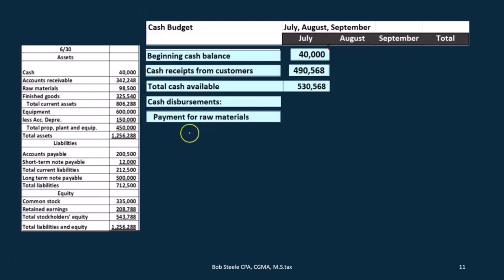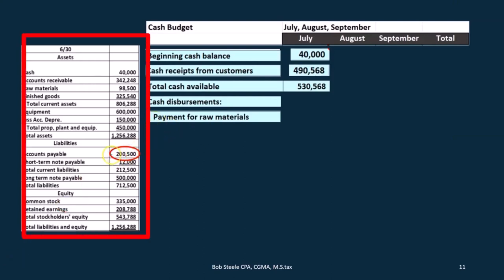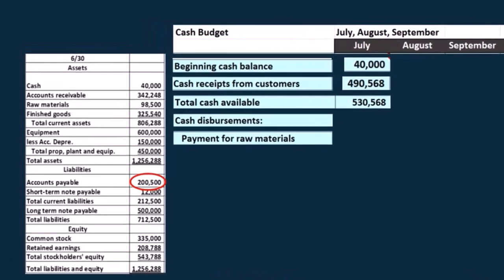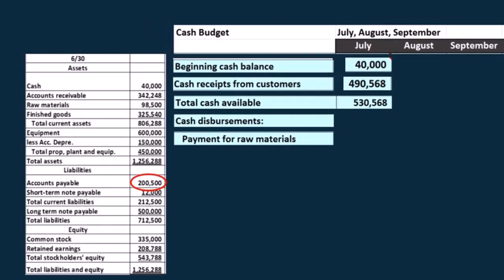We start off with the payments for raw materials. We're going to get this right from the balance sheet because we're going to make a similar assumption for the payments for raw materials — meaning we're going to pay for raw materials on account. We're going to buy it on account and then pay for it next month. We could have more simplified assumptions where we just pay for it this month, or more complex assumptions where we pay the payable over a certain timeframe.